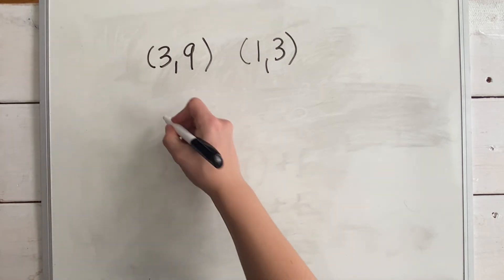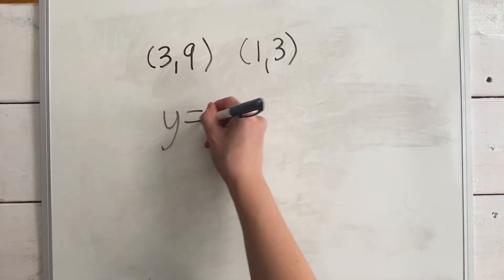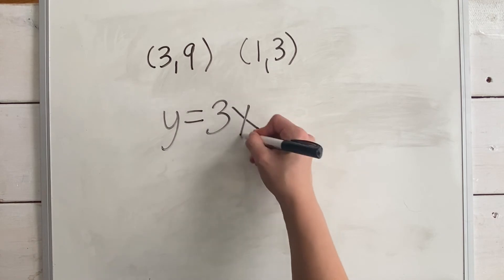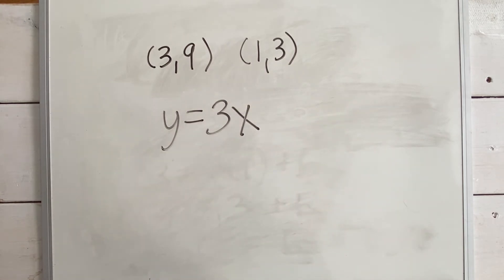So now let's put it all together. We have y equals three x plus zero. So y equals three x.